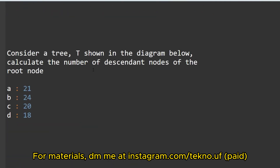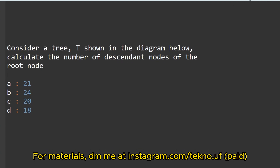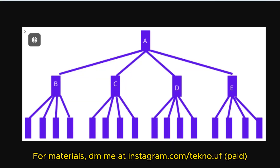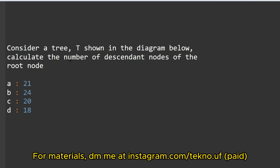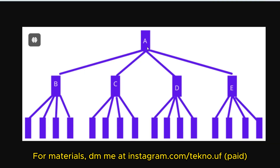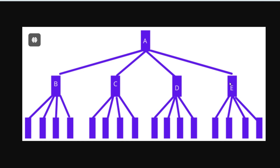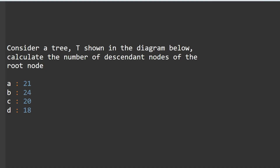The next question: consider a tree T shown in the diagram. Calculate the number of descendant nodes of the root node. Counting all nodes: 1, 2, 3, 4, 5, 6, 7, 8, 9, 10, 11, 12, 13, 14, 15, 16, 17, 18, 19, 20 — so the total number of descendant nodes is 20.